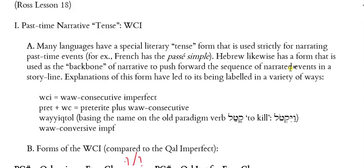Many languages have a special literary tense form that is used strictly for narrating past-time events. If you've ever studied French, they have something called an imperfect for describing what was happening, and then a tense called the passé simple, which is the simple past used for simple past-time narrative action. Hebrew likewise has a form that is used as the backbone for narrative, to push forward the sequence of narrated events in a storyline.